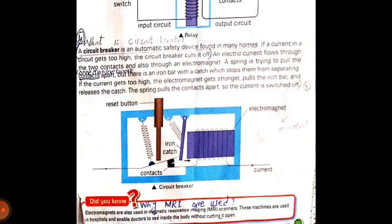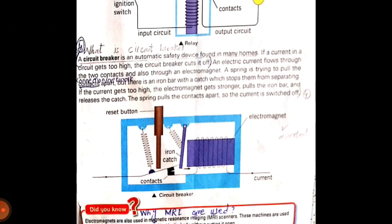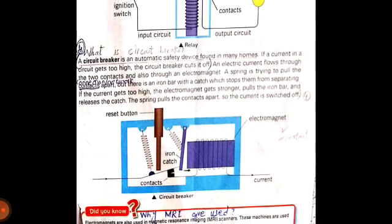When current gets too high, the electromagnet releases the catch. The spring pulls the contacts apart so the current is switched off. This phenomena and procedure is known as the miniature circuit breaker safety device.